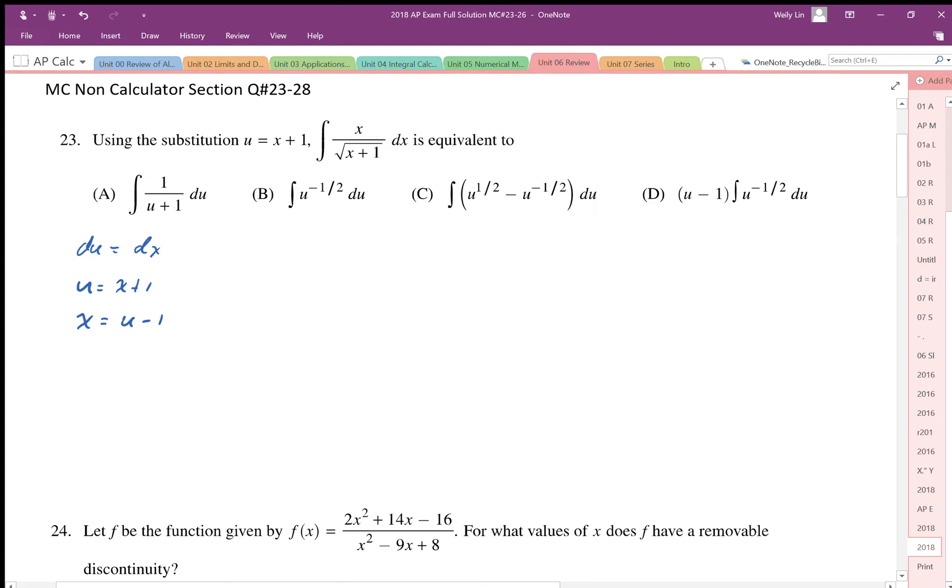So once we have those parts, we can do the substitution. So our new integral is going to look like this: u minus 1 in the numerator, square root u in the denominator, and then we can just replace the dx with a du.